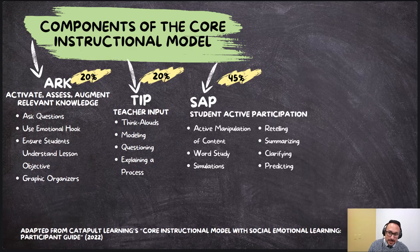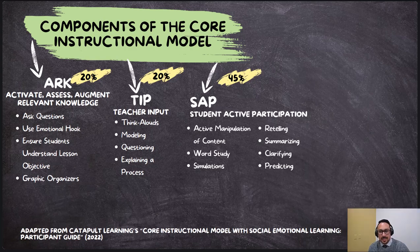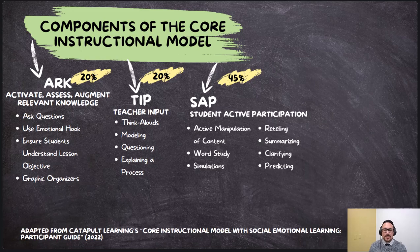During student active participation, students should be actively manipulating the content, engaged in learning through reading, writing, and talking. Examples of SAP include using graphic organizers, writing summaries, filling out T-charts or Cornell notes or other types of notes, turn and talk, etc. This should make up approximately 45% of class time, and 65% when combined with teacher input.